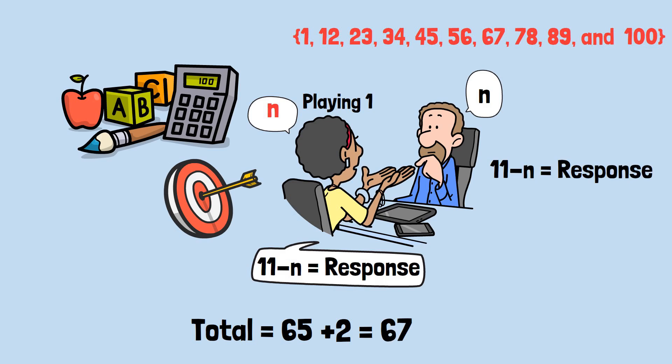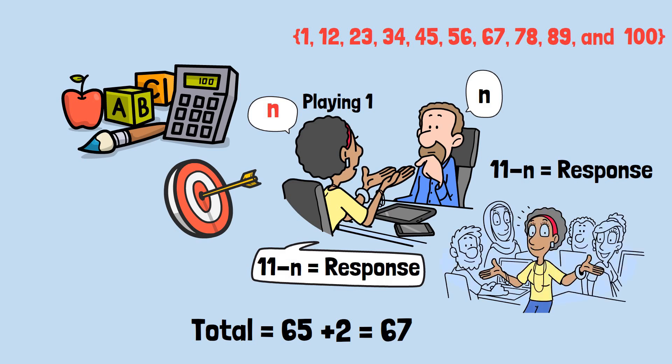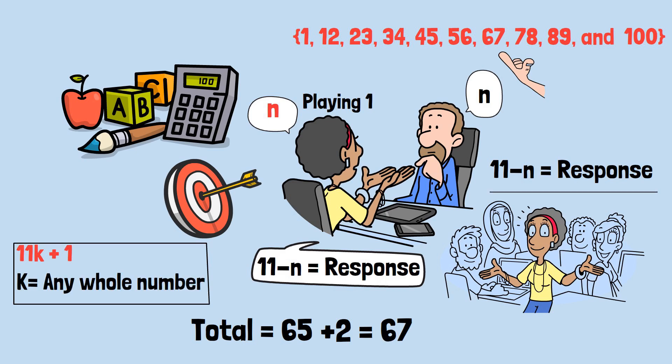From there, you return to the subtraction rule, guaranteeing victory while making it appear that you simply got lucky in the final stretch. Even if you start randomly, you can always regain control by steering toward your arithmetic sequence. The key insight is that once you land on any number of the form 11k plus 1, where k is any whole number, you can follow the subtraction rule to guarantee reaching 100.